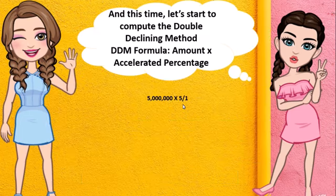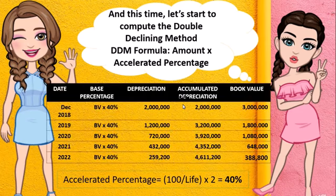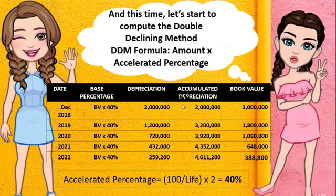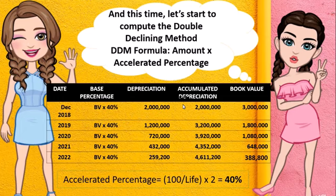Now for the Double Declining Method using the table. The formula is: amount multiplied by the accelerated percentage. We have 100% divided by a life of 5 years multiplied by 2, giving 40%. The basis is the present book value times 40%. First year depreciation is 2,000,000. Second year is 1,200,000. Third year is 720,000. For 2021 it is 432,000, and for 2022 it is 259,200. At the end of the fifth year, if there is a salvage value, that is the time you deduct it.